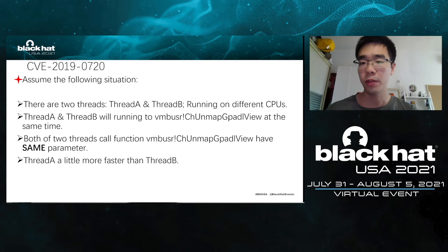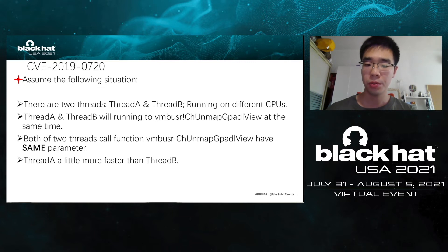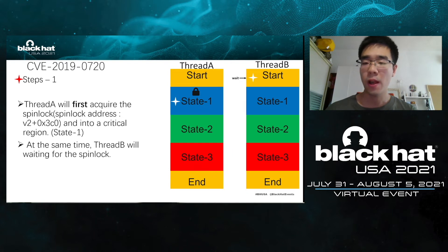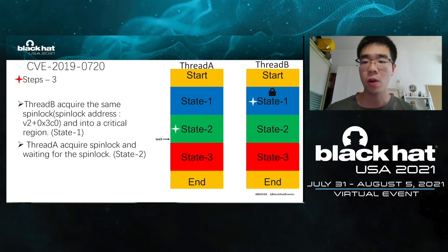Now we assume the following situation. There are two threads, thread A and thread B, running on different CPUs, both running into unmap_gpadl_view at the same time with the same parameter, and thread A is slightly faster than thread B. Step 1: Thread A acquires the spin lock and is in state 1, while thread B waits for the lock. Step 2: Thread A calls lookup_element_generic_table_avl and returns pointer A, then releases the spin lock. Step 3: Thread B acquires the spin lock; thread A acquires the spin lock again and waits. Now thread A is in state 2 and thread B is in state 1.